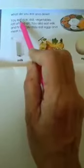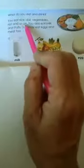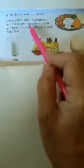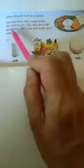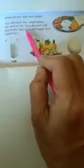What do you eat and drink? You eat rice, dal, vegetables, roti and so on. You also eat milk and fruits. You may eat eggs and meat too.